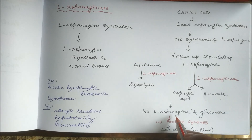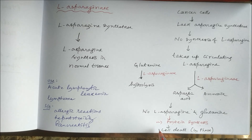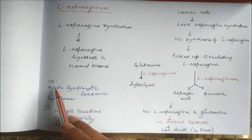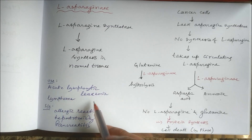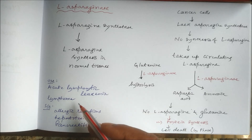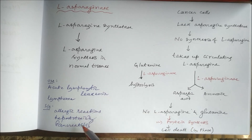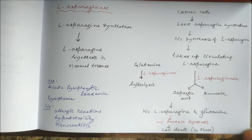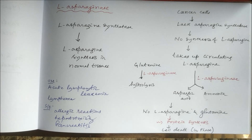So they lack L-Asparagine and Glutamine, there will be no protein synthesis, and that will cause cell death in the G1 phase. L-Asparaginase is used in acute lymphocytic leukemia and lymphoma. It has side effects like allergic reactions, hepatotoxicity, and pancreatitis. This is all about L-Asparaginase, the anti-cancer drug.